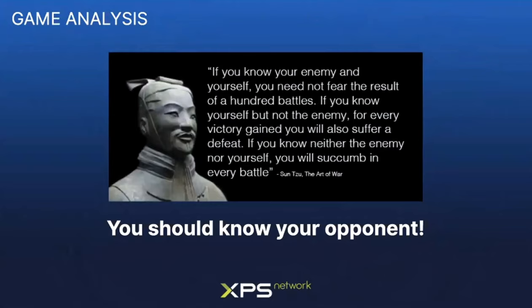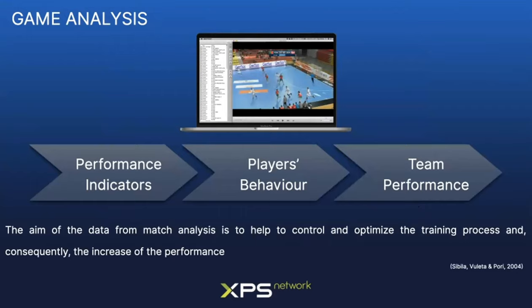This sentence from Sun Tzu could apply a lot to game analysis. Basically, you should know your opponent to achieve success — you should know what you are going to face. The main objective of game analysis is to study the players' behavior and each one's contribution to the overall team performance. We try to find the reasons why teams win or lose matches, assuming we can establish relations between qualitative variables and match outcomes.